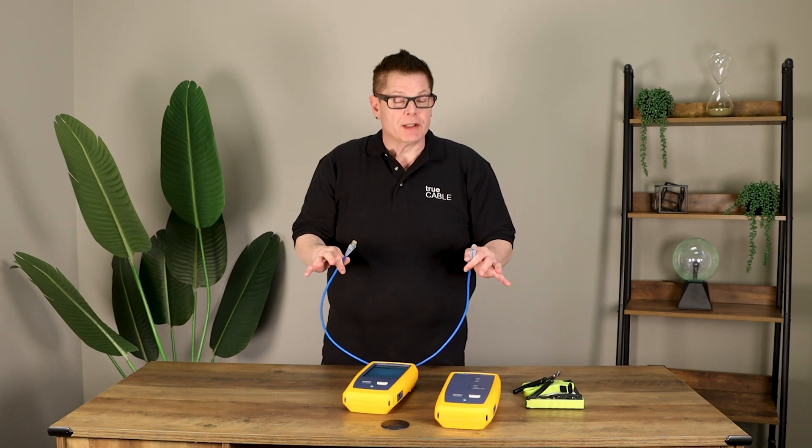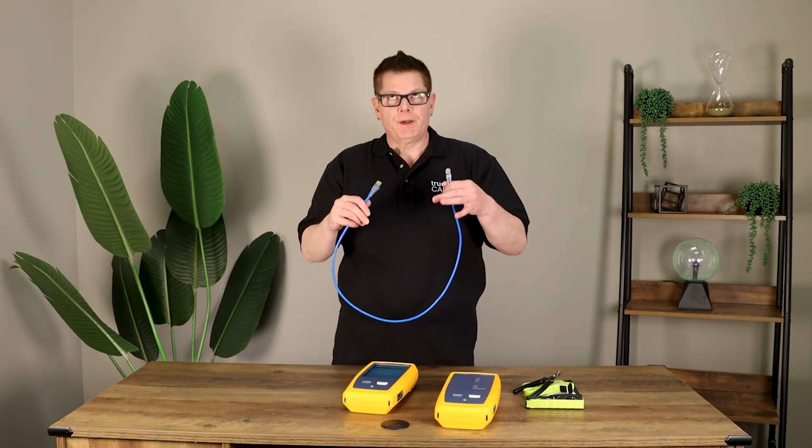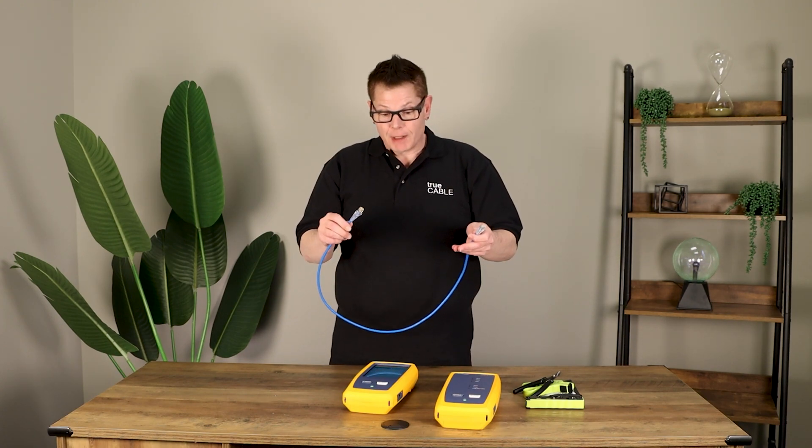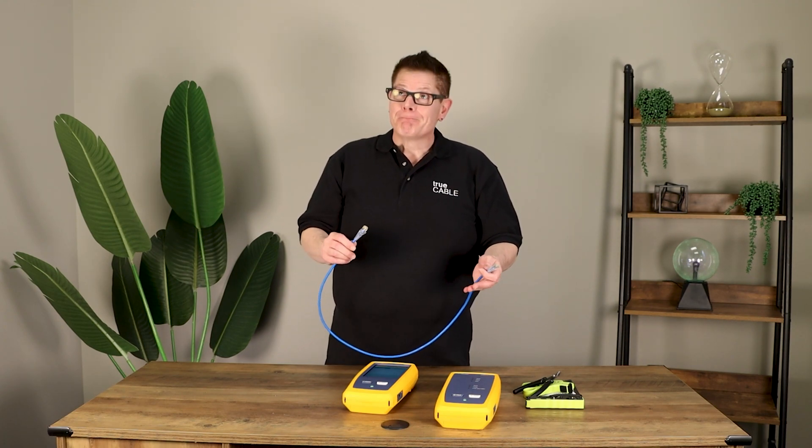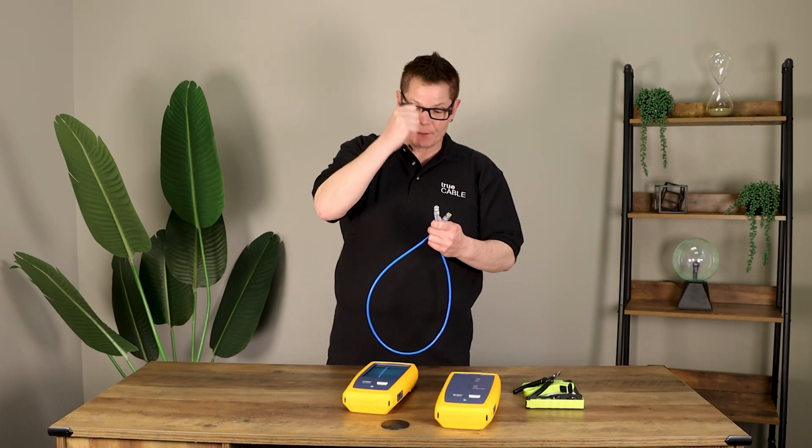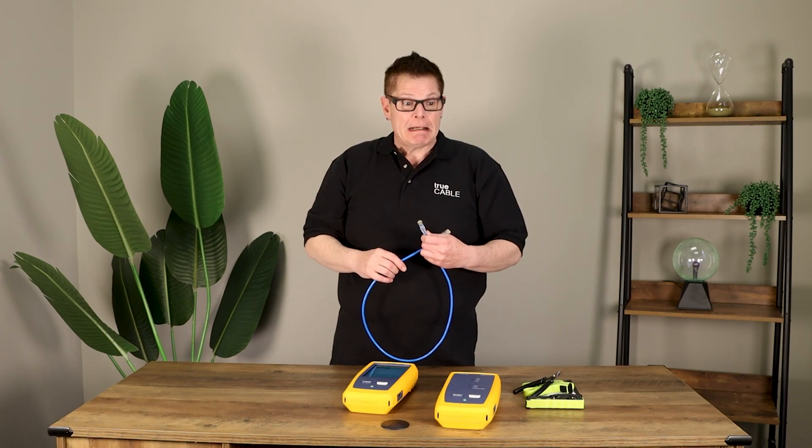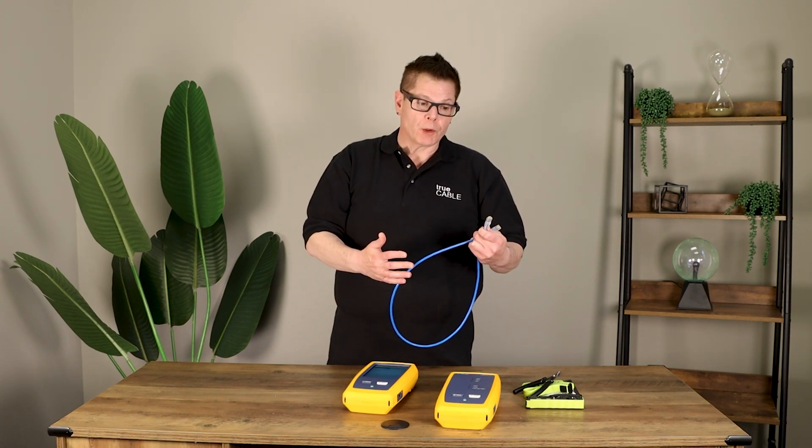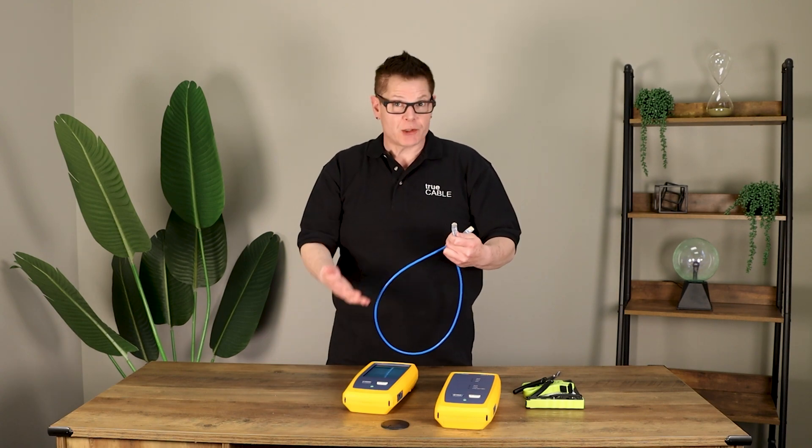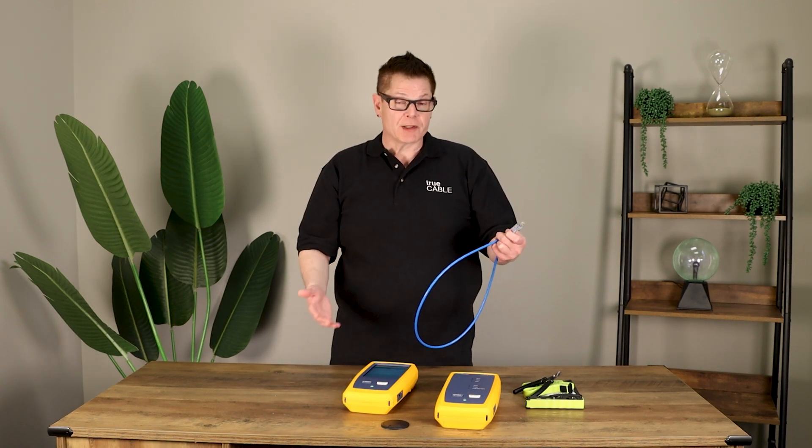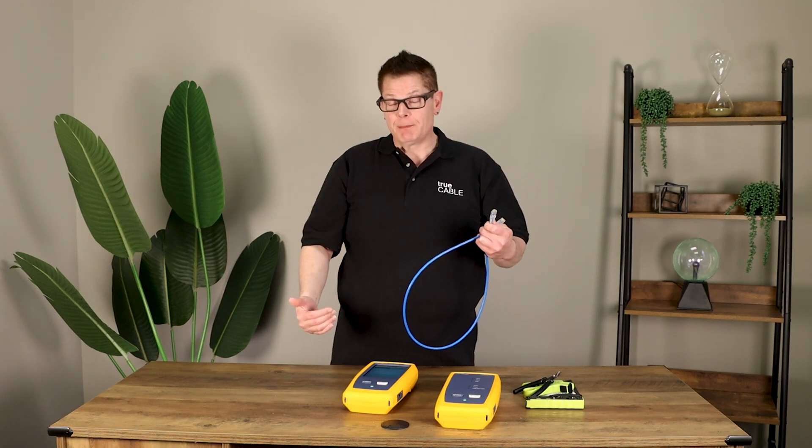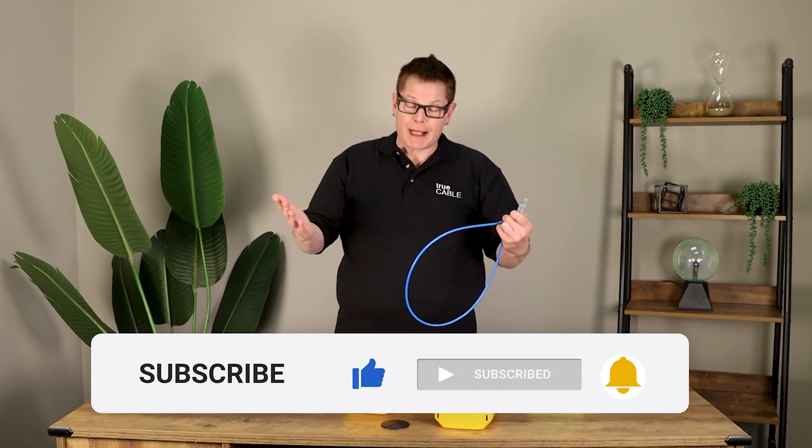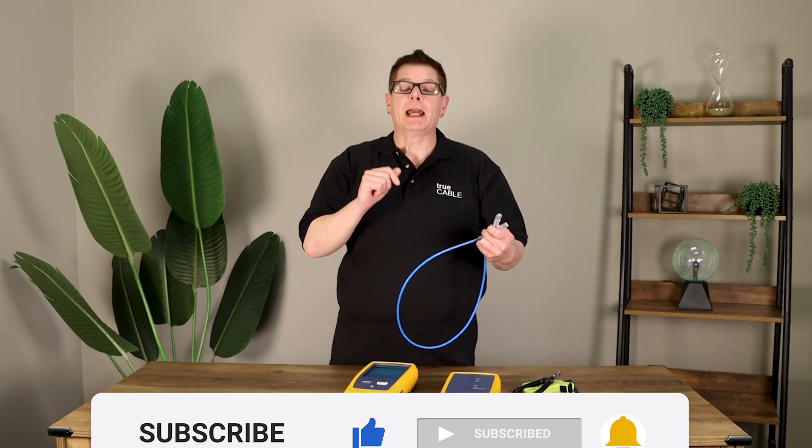Again, the fact that this passed is good, but oftentimes field-terminated patch cords that are using RJ45s don't pass this kind of test. But in this case it did, so I'll just chalk it up to one for the universe, one for luck. If there are any other questions you may have about terminating load bar plugs or why you should use them over certain types of other plugs like pass-throughs—and pass-throughs have their place too—or why field termination plugs are the best of the best, leave us a question in the comments below, send us a message, we'd be happy to get back to you. Subscribe to our channel and give us a thumbs up or a thumbs down. And I'm going to say with that, have a great day and happy networking.